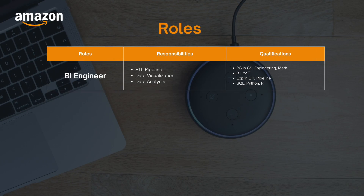The next topic is the various data roles at Amazon. The first is the BI engineering role. BI engineers primarily focus on ETL pipelines, data visualization, and data analysis. The minimum qualifications required are a BS in computer science, engineering, or math, at least three years of experience, experience building ETL pipelines, and programming language experience such as SQL, Python, and R.